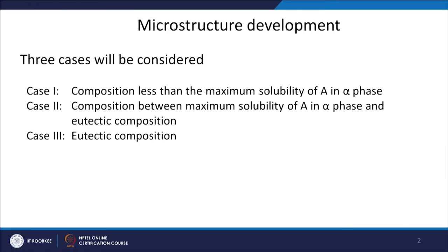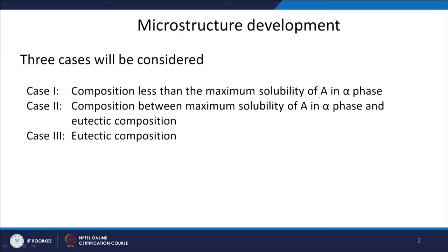In this we will consider three cases. Case one is composition less than the maximum solubility of B in alpha phase. Case two is composition between the maximum solubility of B in alpha phase and eutectic composition. And case three is the eutectic composition itself.